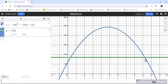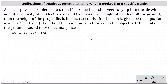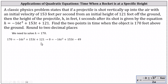Let's solve this algebraically and then come back to verify graphically. To answer the question, we want to solve h equals 170, which means we substitute 170 for h in the equation. Next, we set the equation equal to zero by subtracting 170 from both sides. 121 minus 170 gives us negative 49, so we now want to solve the equation zero equals negative 16t squared plus 153t minus 49 for t.